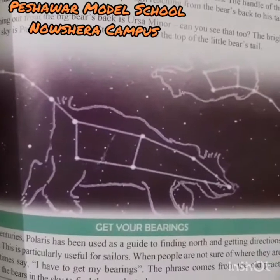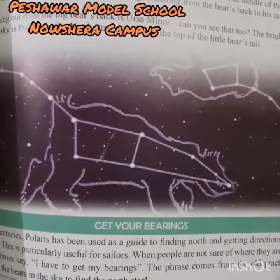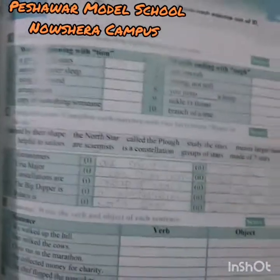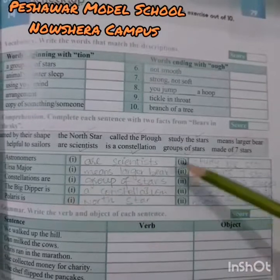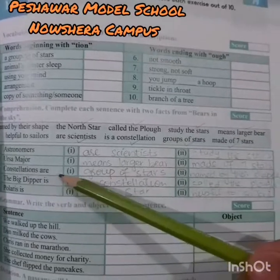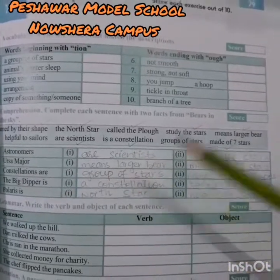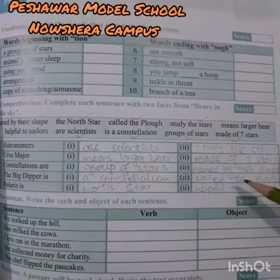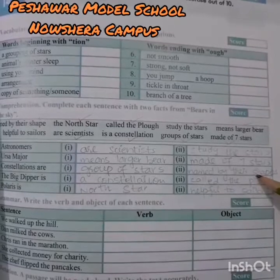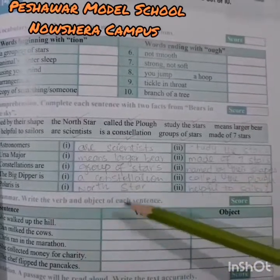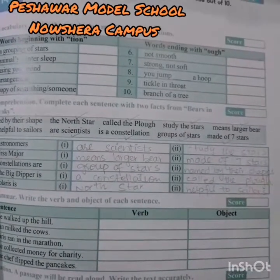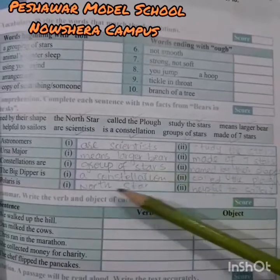So here we have the answers. Our two statements are confirmed: astronomers are scientists and study the stars; Ursa Major means larger bear and is made of seven stars. Constellations are groups of stars named by their shapes. The Big Dipper is a constellation called the Plow. And Polaris is also called the North Star, and is helpful for sailors — as we just read on page 74. So this question is done.